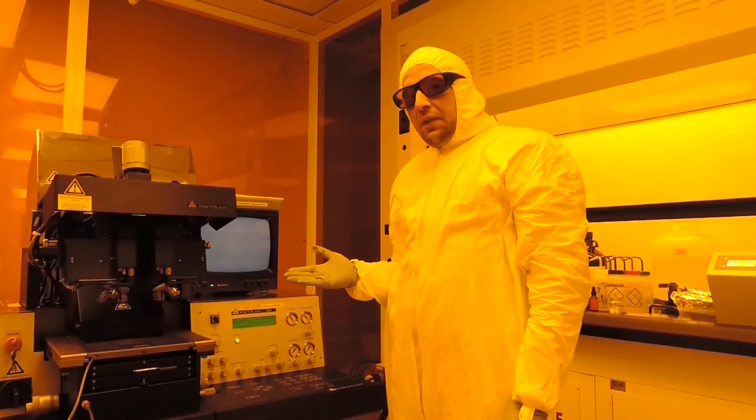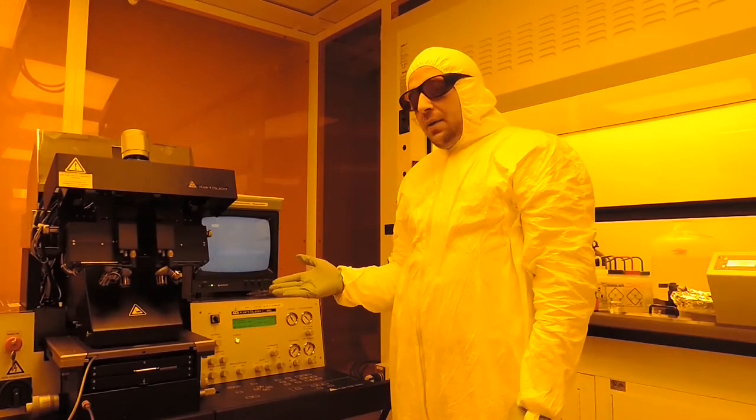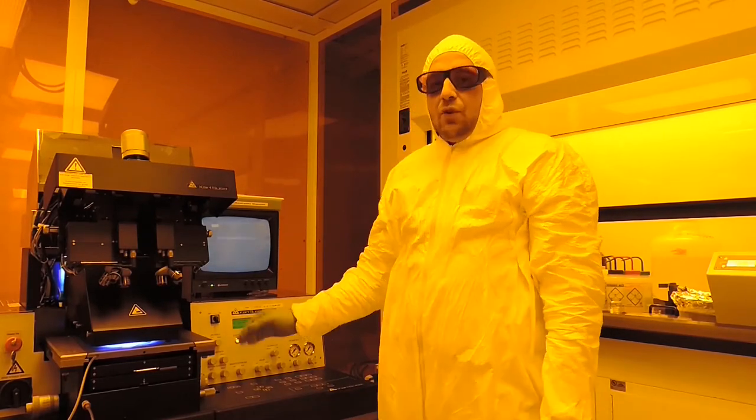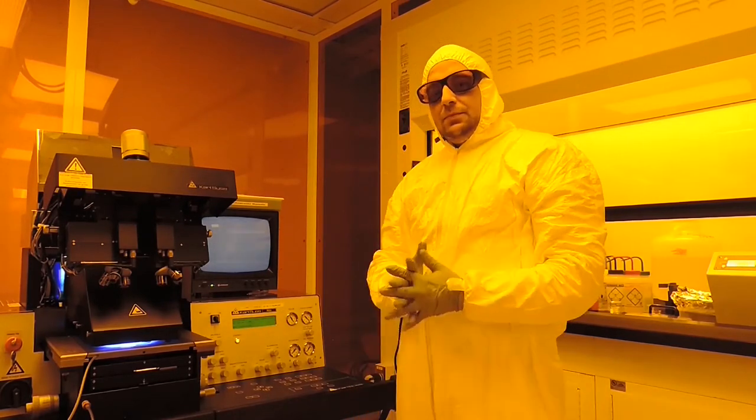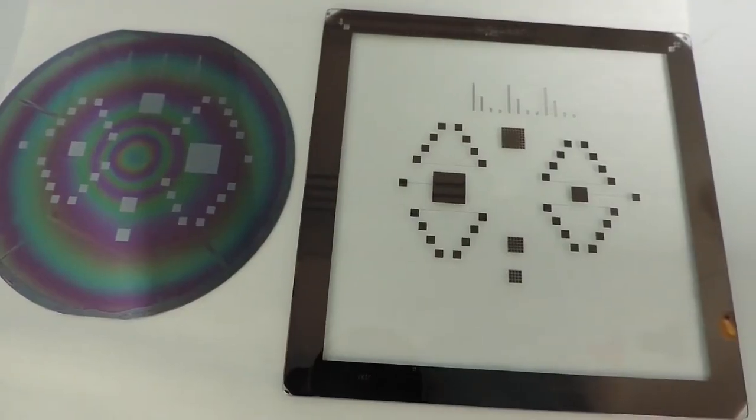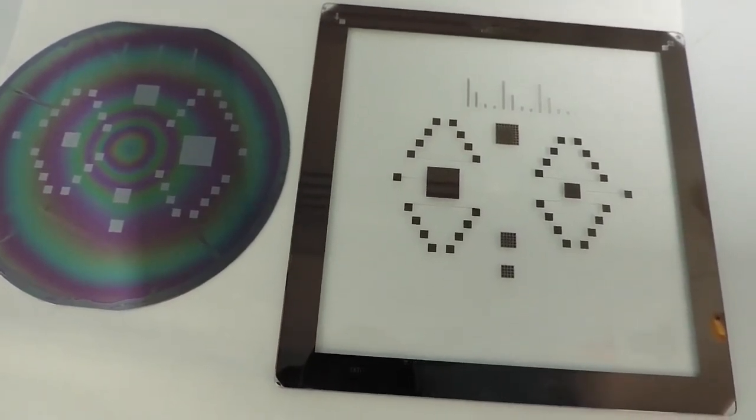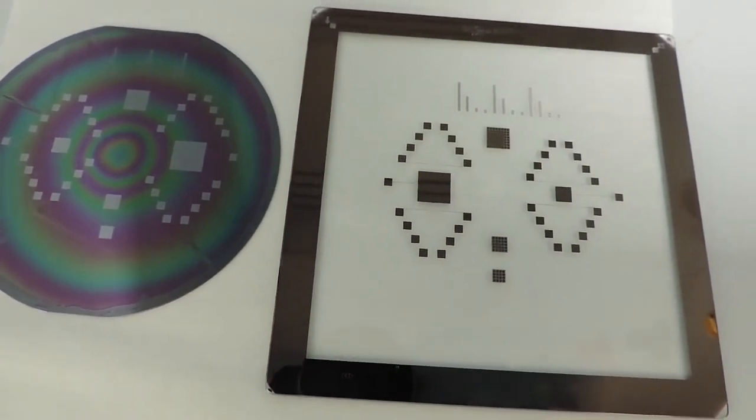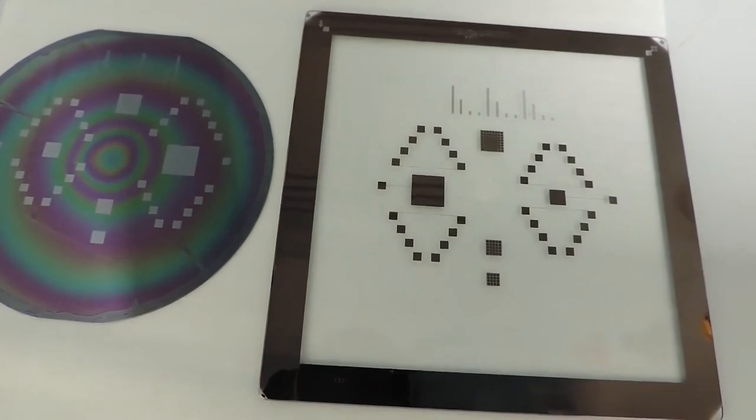The wafer is exposed to UV light for some time using the contact printer, which is an MA6 from Karl Suss. After exposure and development of the wafer, we can see clearly the pattern of the photomask on the surface of the silicon wafer, which is at this point ready for metallization and lift-off process.